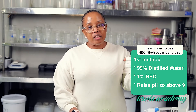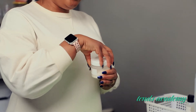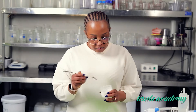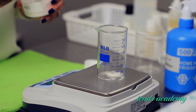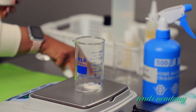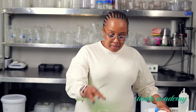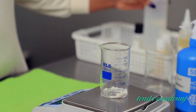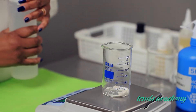We're going to use HEC — hydroxyethyl cellulose — and measure 1% of it. I am making a 50-gram batch, which means I need only 0.5 grams of HEC in my formulation. HEC is a thickener; it comes in a beige color and is a very light powder.